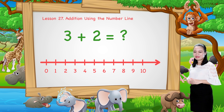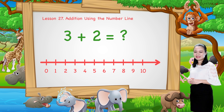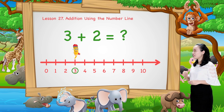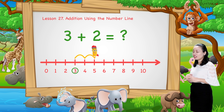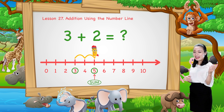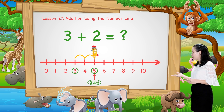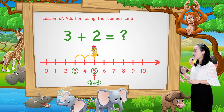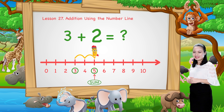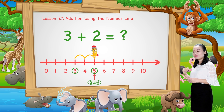To find 3 plus 2, we start from number 3. Then, jump two numbers to the right. Then, see the number where we stop. This number is the sum. Here, we land at number 5. Therefore, 3 plus 2 equals 5.